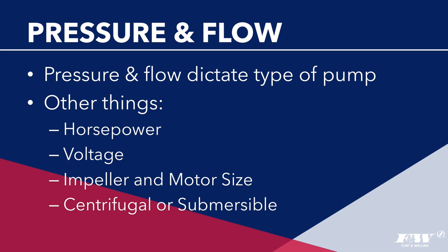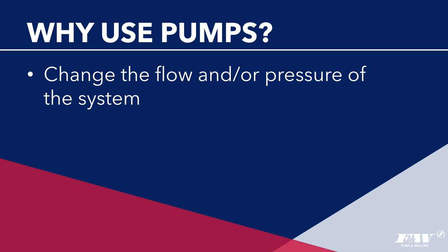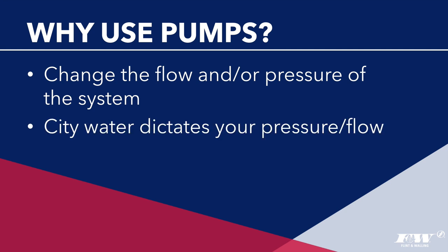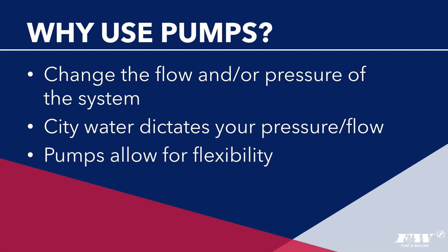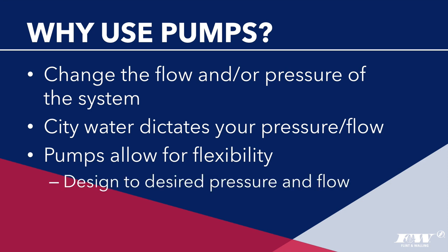One of the great things about using pumps is that you can change the flow and/or the pressure of the system. An irrigation system with a pump isn't like one hooked up to city water, where pressure and flow rate are determined by the city's water supply. You have the flexibility to tailor the water supply to your system's needs — either by increasing the pressure, or, if using a well, lake, or pond, by increasing the flow rate as well. The most important things you'll need to know are your desired pressure and flow rate at the point the water leaves the pump.